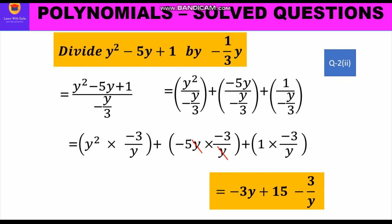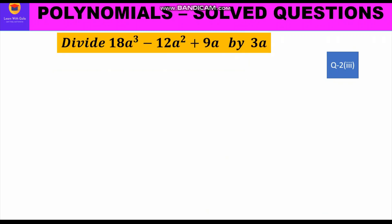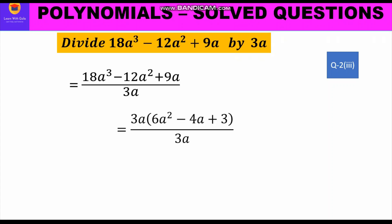Now let us move to the third part. It is given: divide 18a cube minus 12a square plus 9a by 3a. Writing in fraction form: (18a³ - 12a² + 9a) upon 3a. We can take 3a common from the numerator to get 3a(6a² - 4a + 3) upon 3a. The 3a terms cancel and we are left with 6a² - 4a + 3 as the answer.